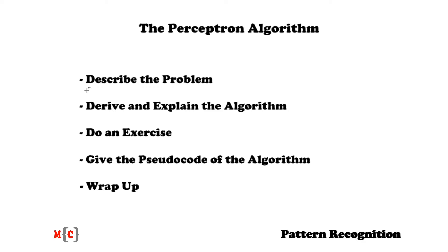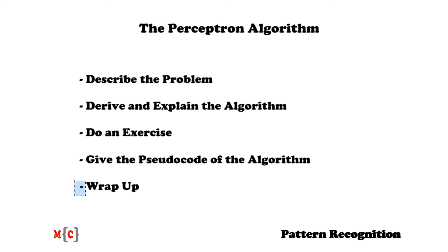First, I'll describe the problem. Then we're going to derive the algorithm and I'll explain how the algorithm works. After that we'll do an exercise, which we're going to answer together. Then I'll provide you with a pseudocode and we'll go over it. And lastly we'll briefly wrap up our findings where I'll talk about the advantages and disadvantages of the algorithm and provide you with a little outlook.